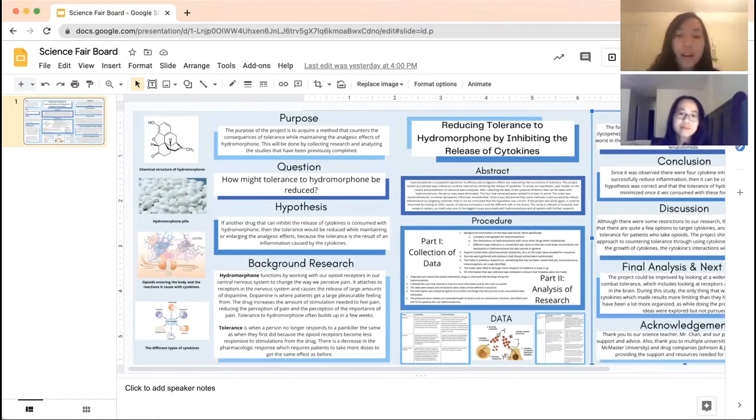The aim of this project is to find a method that can counter the consequences of tolerance while maintaining the analgesic effects of hydromorphone. We did this by looking at the involvement of cytokines in the tolerance to hydromorphone and then comparing different cytokine inhibitors to find the best one.